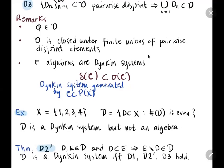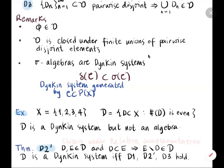The second condition — closure under complementation — can be replaced by the condition D2 prime: closure under relative complementation. Precisely, if D and E are in the Dynkin system and D ⊆ E, then the set difference E minus D (the complement of D relative to E) must also be in the Dynkin system. The converse also holds: if D1, D2 prime, and D3 hold, then D is a Dynkin system.